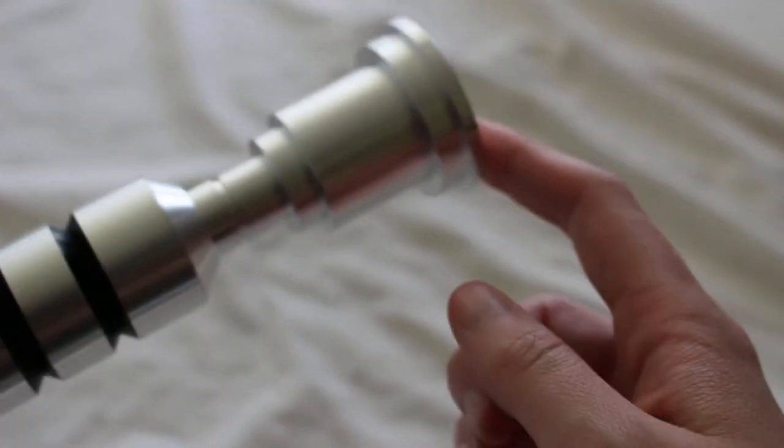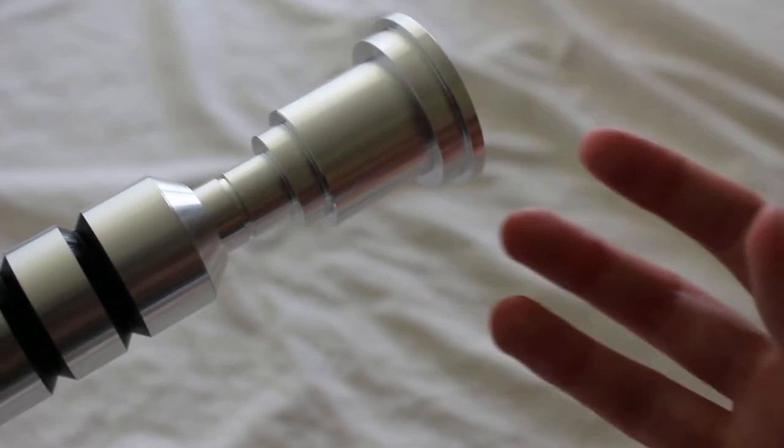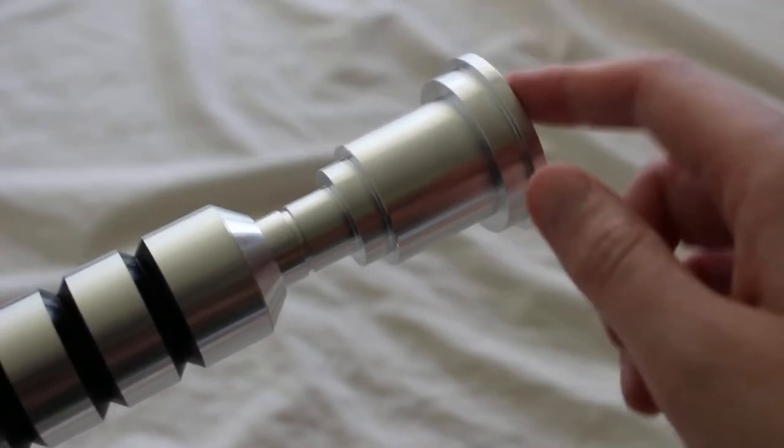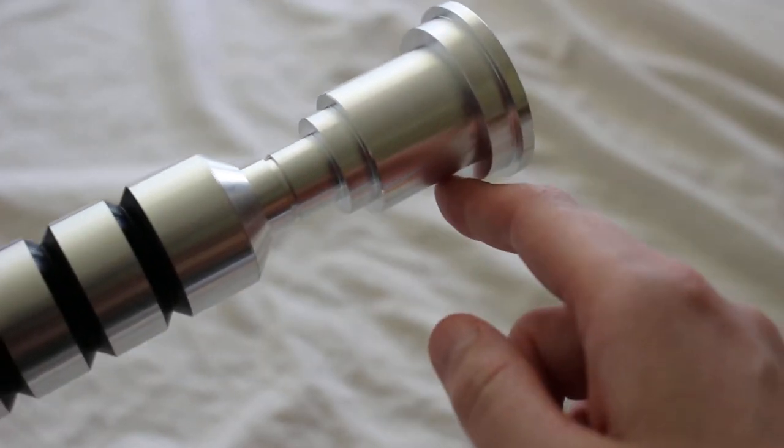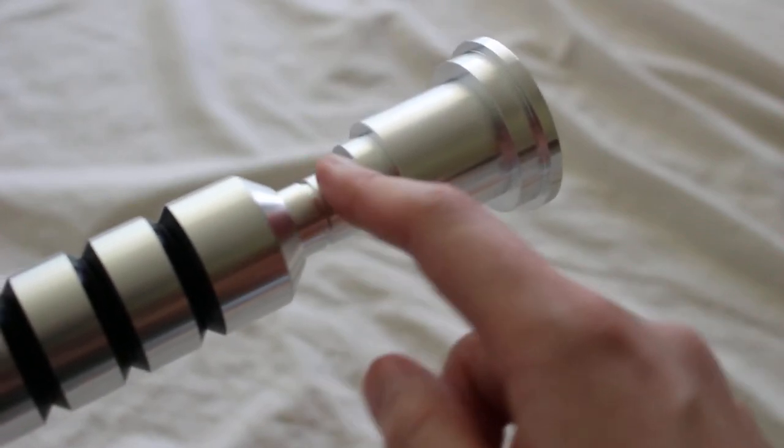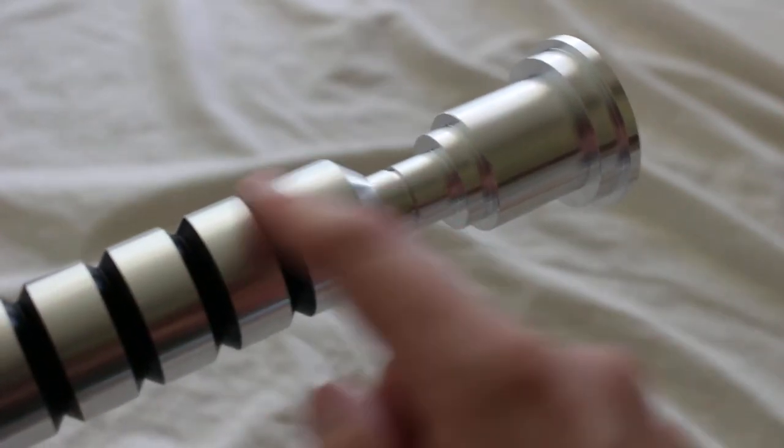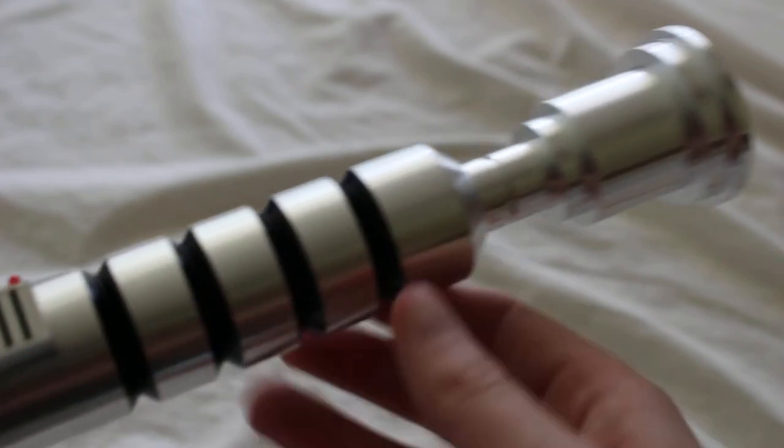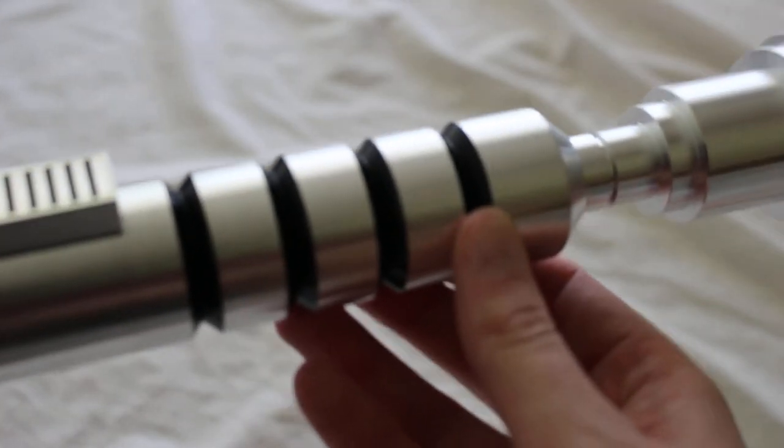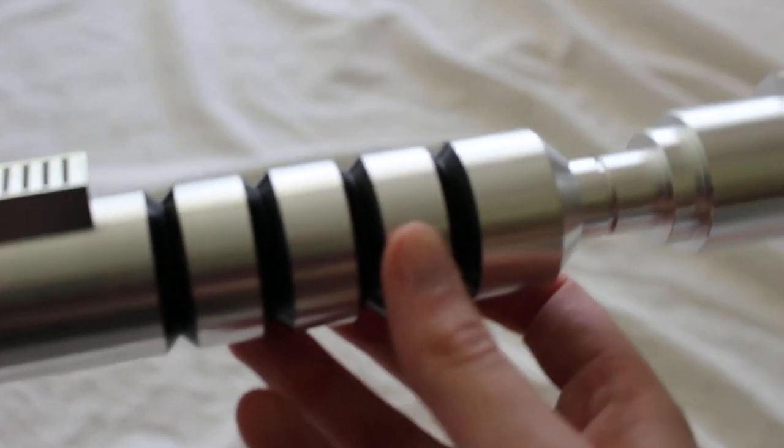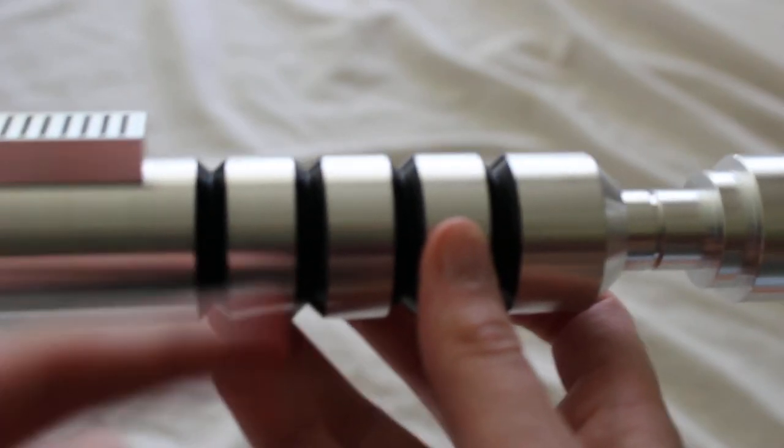The very top of the hilt has that iconic, classic Flaherty emitter with this sort of bell shape to it, and then the thin neck here. Below that, we've got these four very deep grooves - a very deep grooves grip section with sort of a V shape to it.